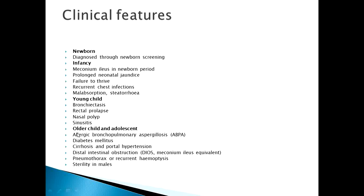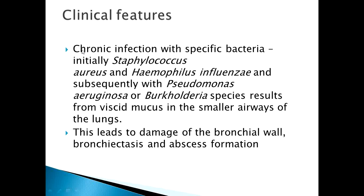Young children may present with bronchiectasis, rectal prolapse, nasal polyps, or sinusitis. Older children and adolescents may present with allergic bronchopulmonary aspergillosis (ABPA) and diabetes mellitus. Complications include cirrhosis and portal hypertension, distal intestinal obstruction (meconium ileus equivalent in adolescents), pneumothorax, recurrent hemoptysis, and sterility in males.